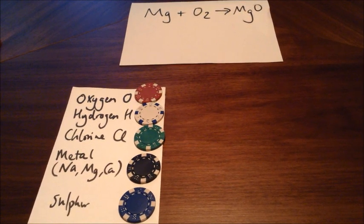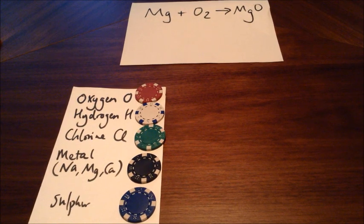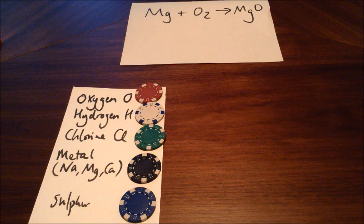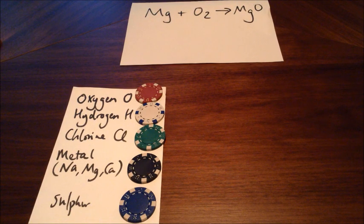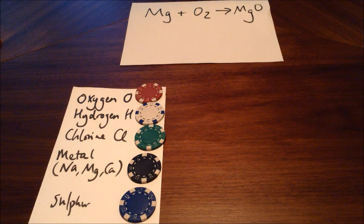This video is going to help you learn how to balance equations using poker chips. I have provided a key down the left-hand side. A red poker chip represents oxygen, a white one for hydrogen, a green one for chlorine. Our metal is always going to be black, and sulfur, which we get to later on, is going to be blue.